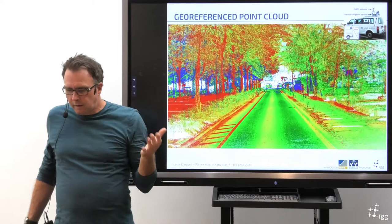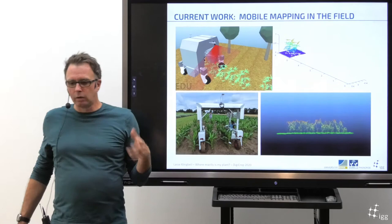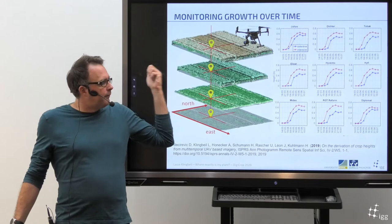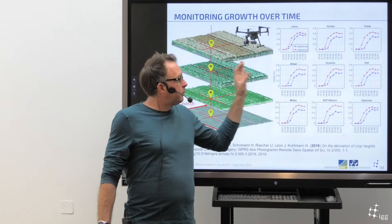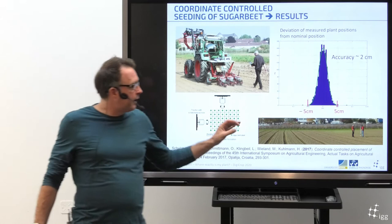Another example I will show is how we plan to do that in the field using a robot, where we generate georeferenced point clouds from plants, and also how we use drones to generate crop height growth rates from different genotypes of winter wheat. The last example I want to show is a precise position-controlled seeding of sugar beets, where we were able to plant sugar beets individually with an accuracy of centimeters.